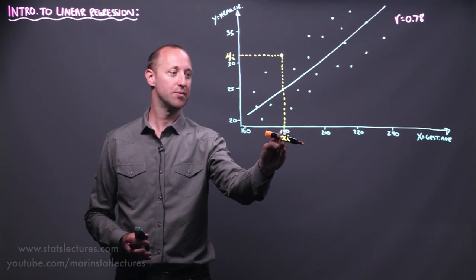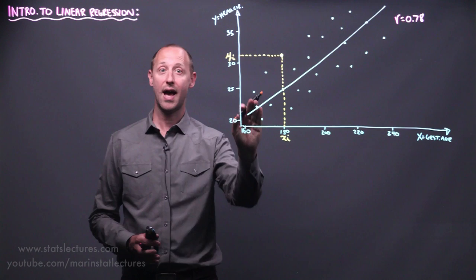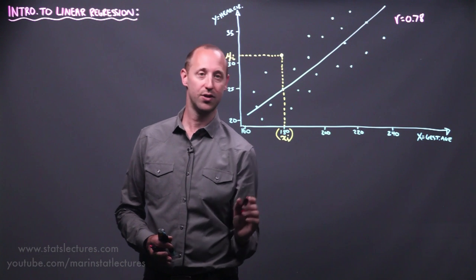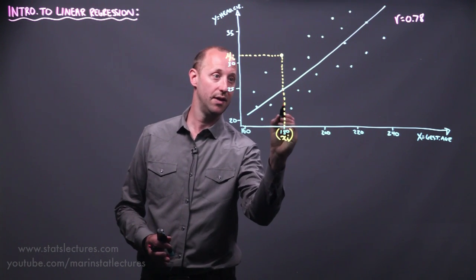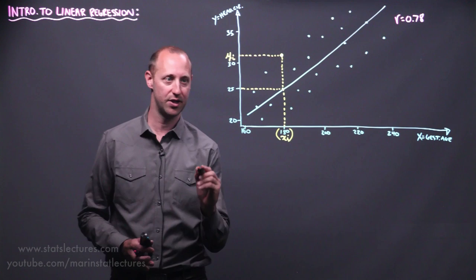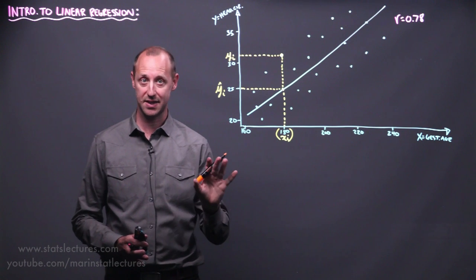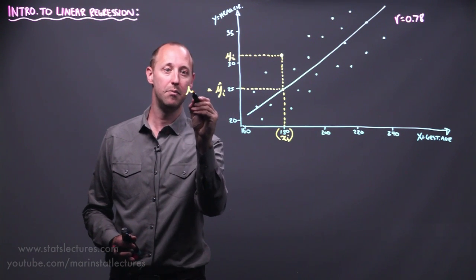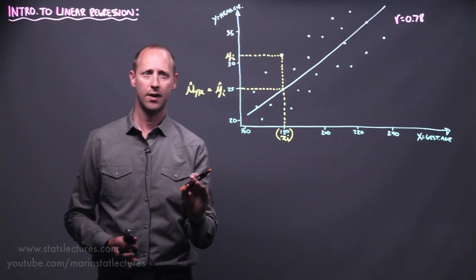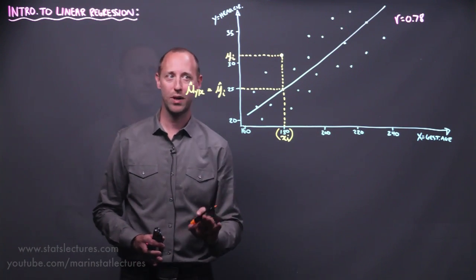For this baby, here's their observed gestational age and their observed head circumference. We can also use the regression line to start to estimate y values. For this particular individual, at 180 days of gestation, our model would estimate that their head circumference is roughly 25 — that's what we would predict or estimate it should be. We label this yi-hat, a hat indicating it's an estimated value, or alternatively the estimated mean of y given x.